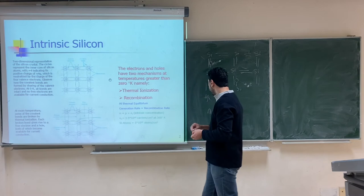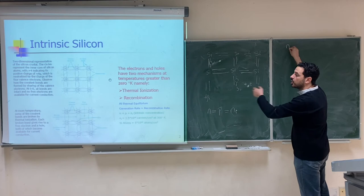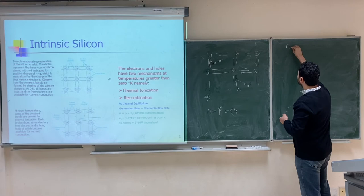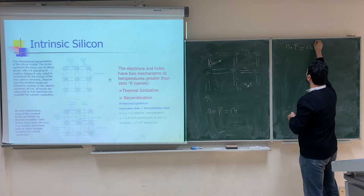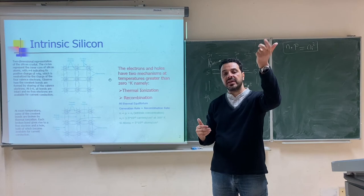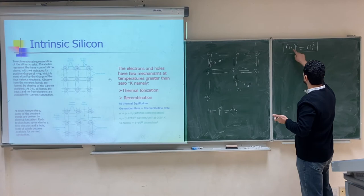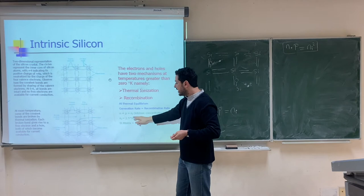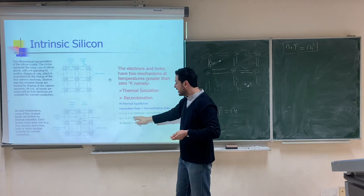There is an important equation that always applies — whether for intrinsic, N-doped, or P-doped silicon: the product of the electron concentration n and the hole concentration p must always equal nᵢ², the intrinsic concentration squared. This means if the concentration of electrons increases, the concentration of holes must decrease to keep this product constant.